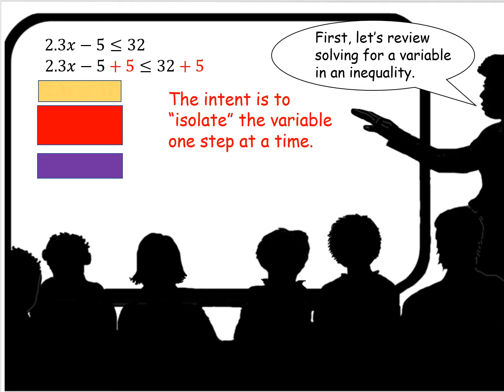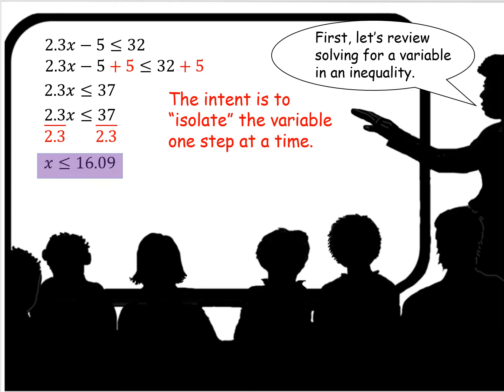So looking at our inequality, 2.3x minus 5 is less than or equal to 32. We're going to add 5 to both sides.